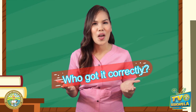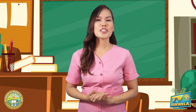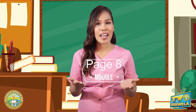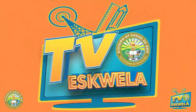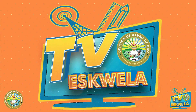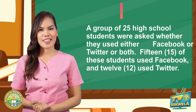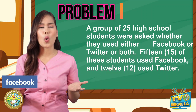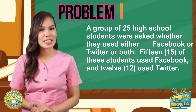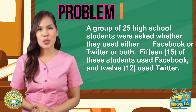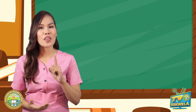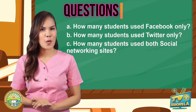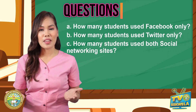Who got it correctly? Good job! Now that you recall the use of Venn Diagram, let's proceed to solve this problem found on page 8 in your modules. A group of 25 high school students were asked whether they used either Facebook or Twitter or both. 15 of these students used Facebook and 12 used Twitter. How many students used Facebook only? How many used Twitter only? And how many students used both social networking sites?